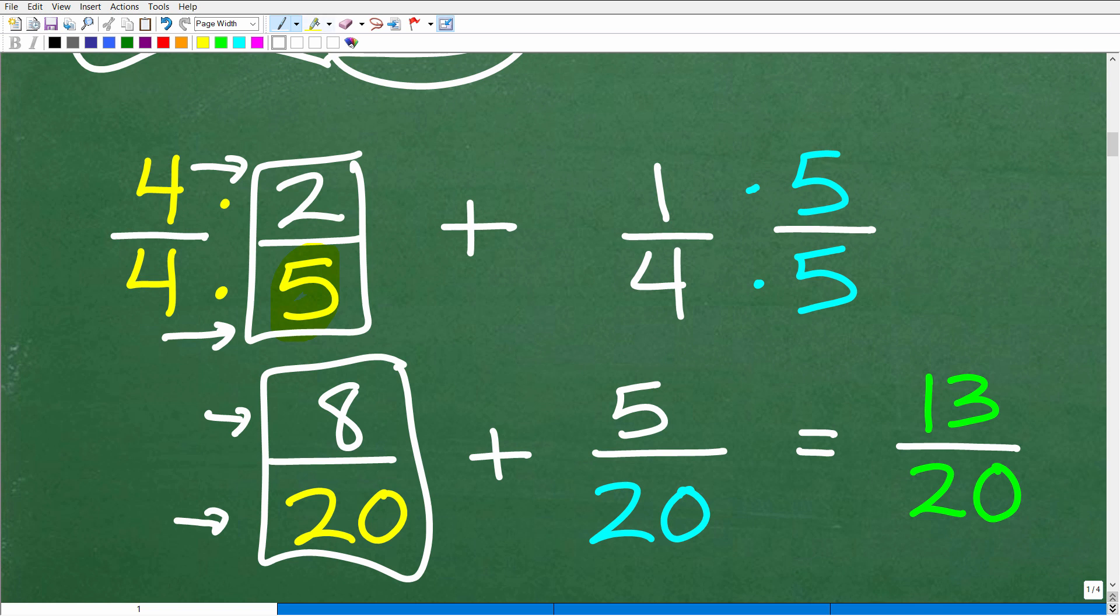So let's go over to this fraction. We've got 1/4. How do I turn this 4 into a 20? Well, just multiply by 5, but I've got to multiply the numerator by 5. So 4 times 5 is 20, and 1 times 5, of course, is 5. So we rewrite the fraction 1/4 to an equivalent fraction 5/20.